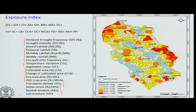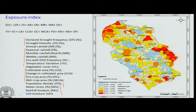Each parameter is given a ranking and weightage depending upon past history and then added up. The exposure of population and agriculture due to drought conditions is then grouped from very high to low depending upon the cumulative score based on the exposure ratings.